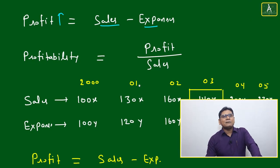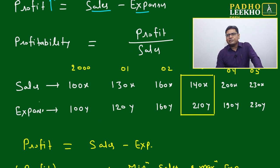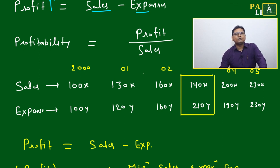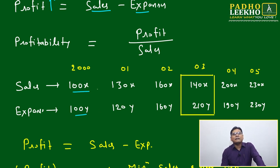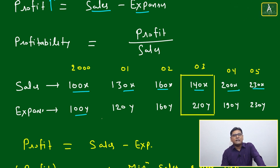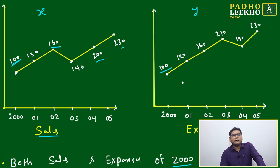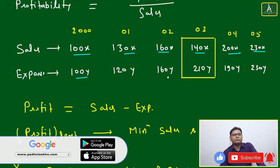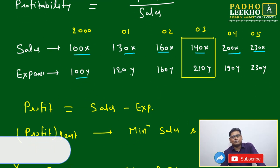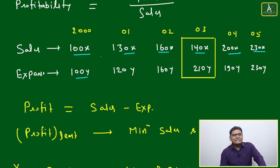Profit is sales minus expenses, and profitability by definition is profit divided by sales. We write this data in tabular format with years 2000 to 2005. Sales become 100x, 130x, 160x, 140x, 200x, 230x, and expenses become 100y, 120y, 160y, 210y, 190y, 230y. Now just by looking at the coefficients, we can identify where sales minus expenses can be minimum.